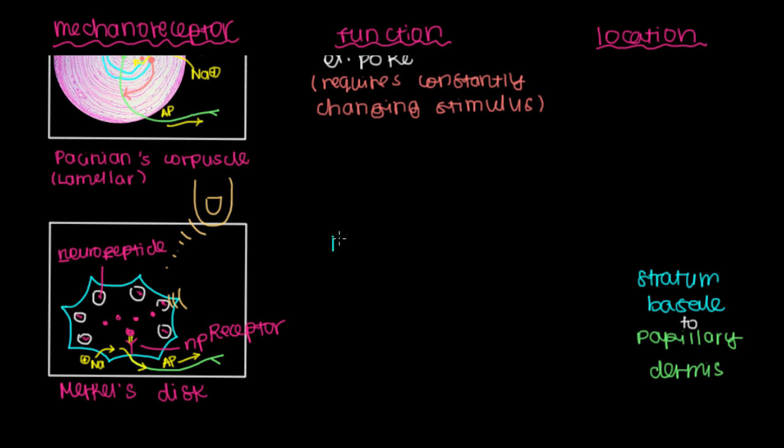And so it's responsible for perceiving light touch. Light touch, this is going to be on both hairy and non-hairy skin. But it's different from Meissner's corpuscle because this is sustained light touch.